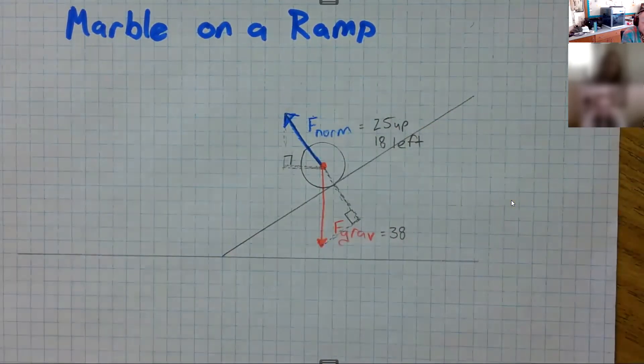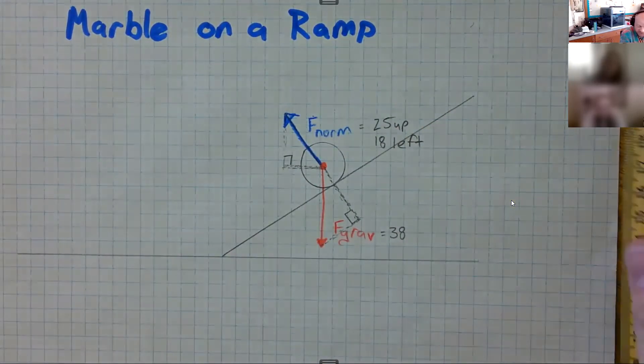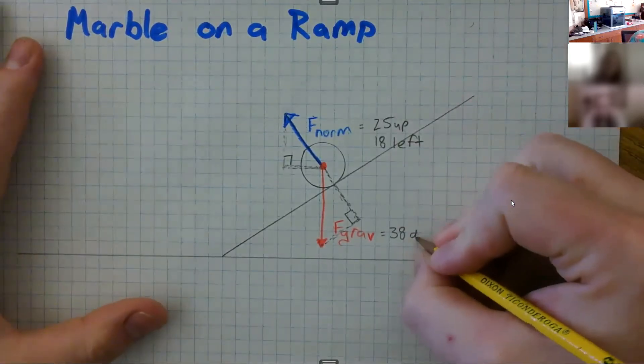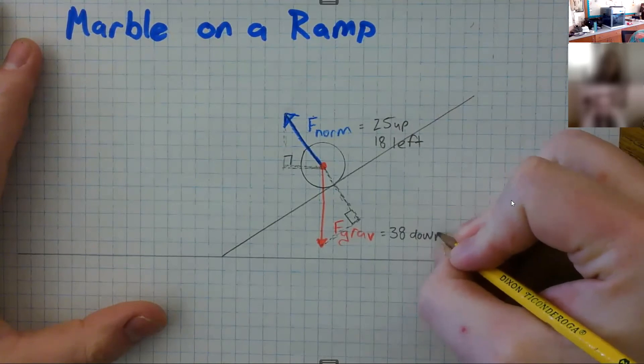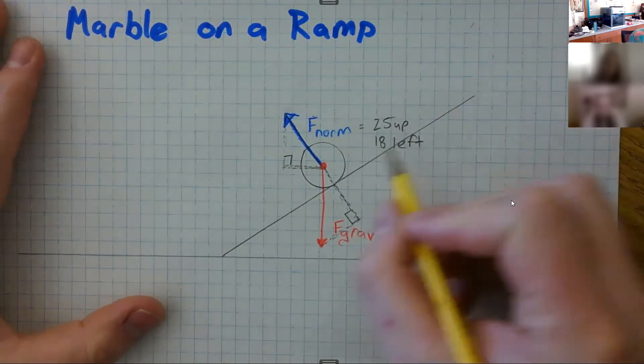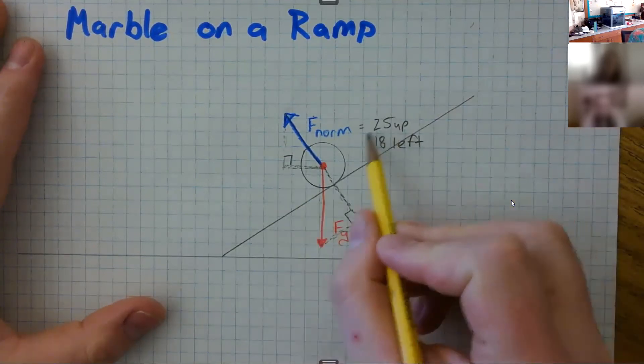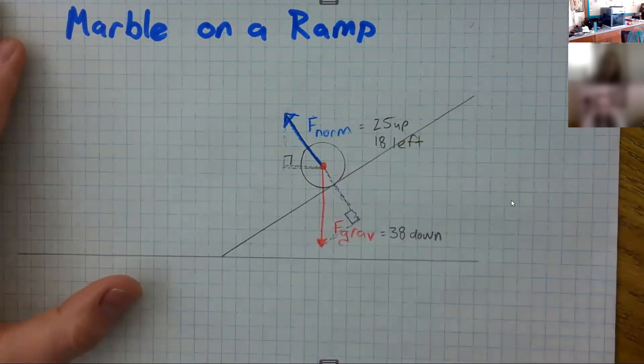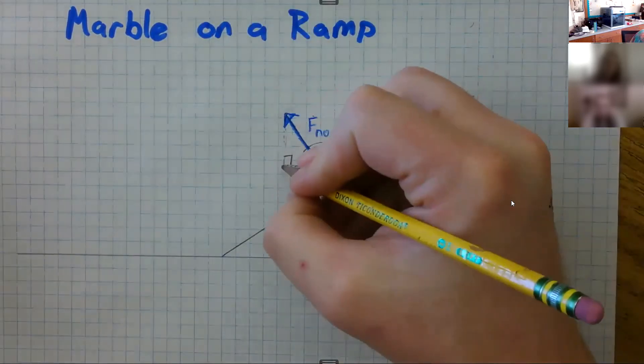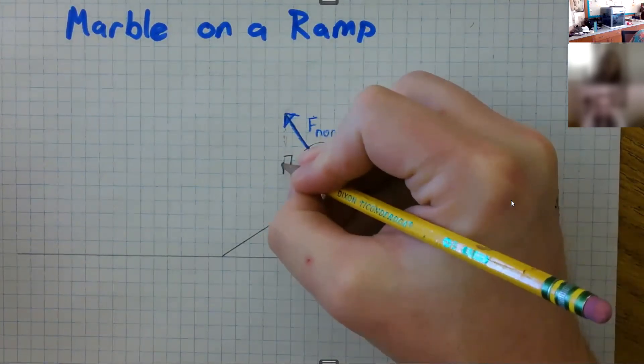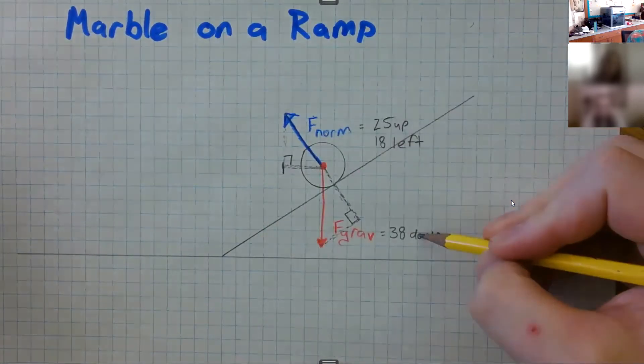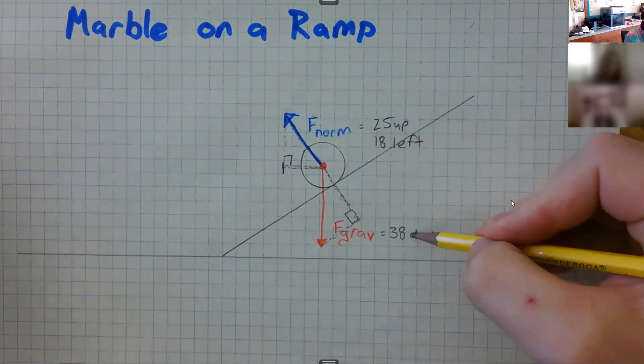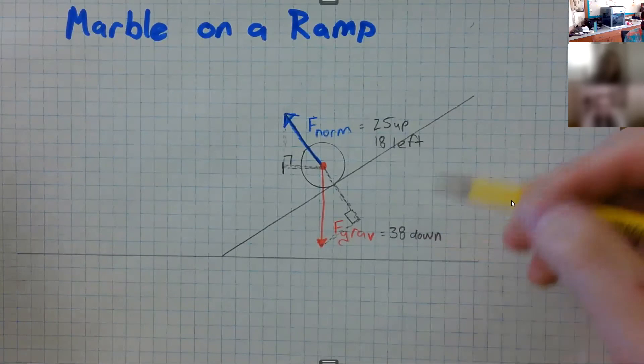Okay, now we need to figure out the net force, which means we have to add this all together. So first, we have no right. The only left-right we have is 18 left. Okay, so let's go 18 to the left. We know where that is, that's right here, 18 left. And then we need to add 38 down and 25 up. So what happens when we add those together? We get 13 down.